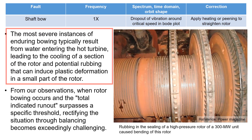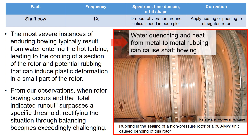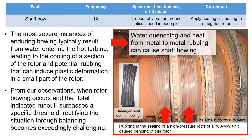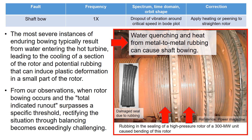The most severe instances of enduring bowing typically result from water entering the hot turbine, leading to cooling of a section of the rotor and potentially causing rubbing that can induce plastic deformation in a small part of the rotor. An example of the seal rubbing the rotor is shown on the right, which can slowly bend the shaft over time.